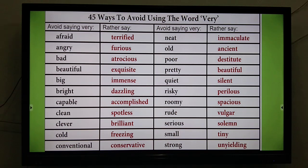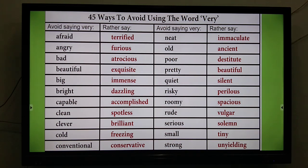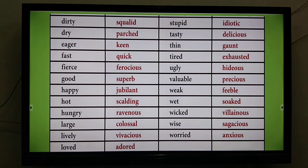Note the pronunciation and spelling of 'quiet' (Q-U-I-E-T, meaning silent) versus 'quite' (Q-U-I-T-E, meaning a little). Continuing the list: for risky, 'perilous'; for roomy, 'spacious'; for rude, 'vulgar'; for serious, 'solemn'; for small, 'tiny'; for strong, 'unyielding'; for dirty, 'squalid'; for dry, 'parched'; for keen, 'quick'; for ferocious use 'ferocious'; for good, 'superb'; for happy, 'jubilant'; for hot, 'scalding'; for hungry, 'ravenous'; for large, 'colossal'; for lively, 'vivacious.'